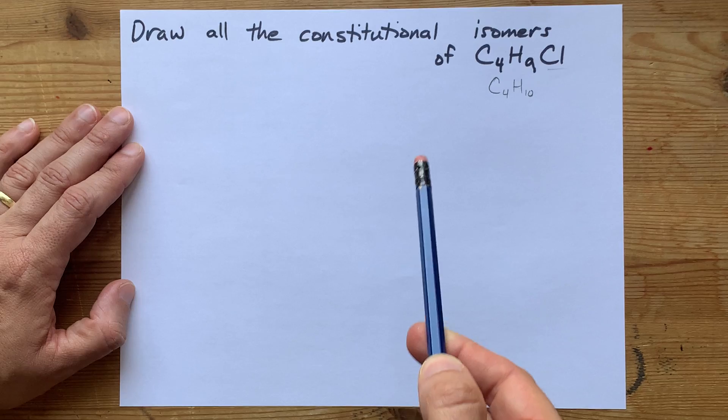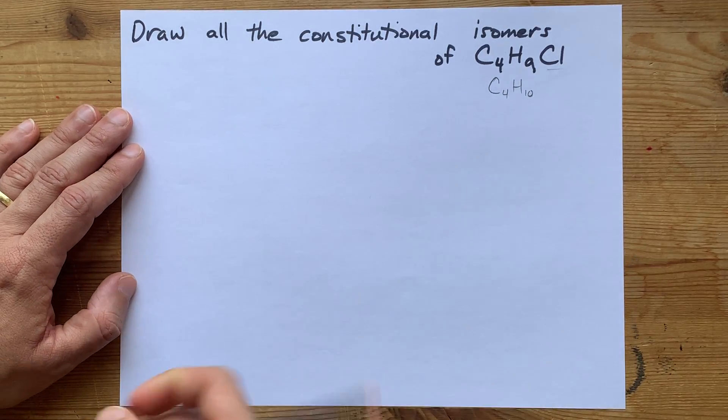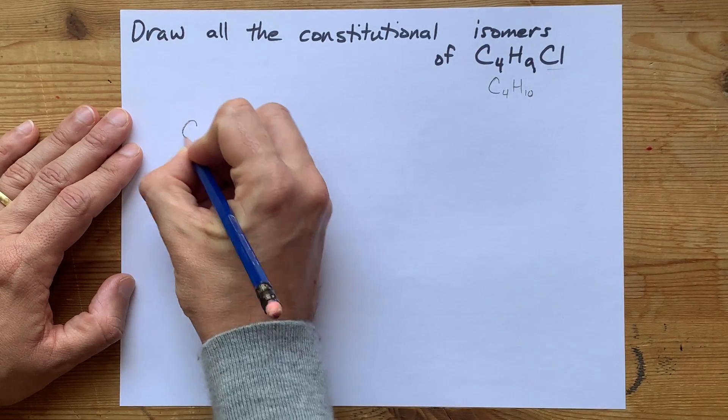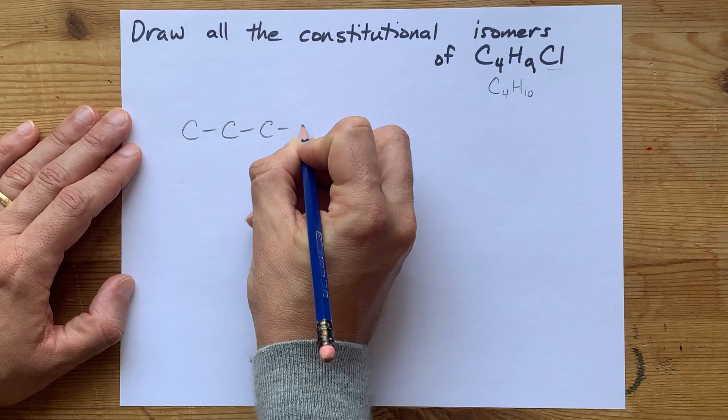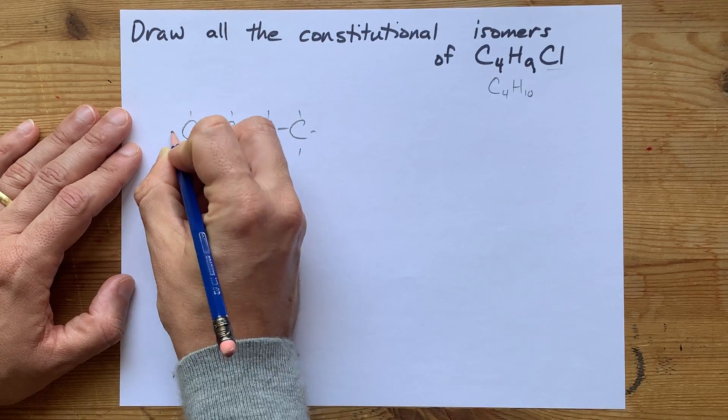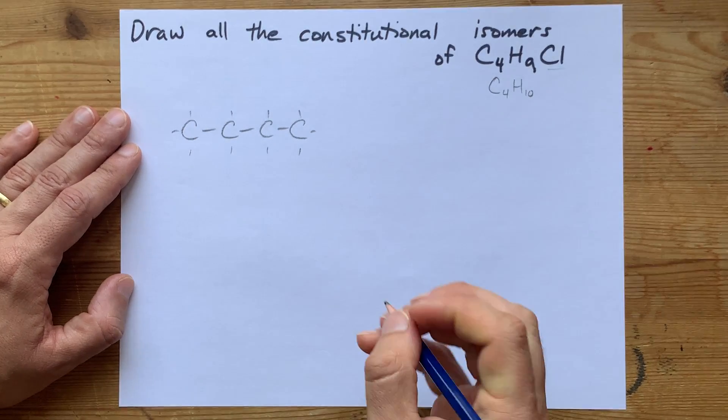And then I'm going to change various H's to Cl's to see if they give me different isomers of this compound. Anyways, let's get on with it. C4H10, one of those is regular butane, four carbons in a row, all single bonded.